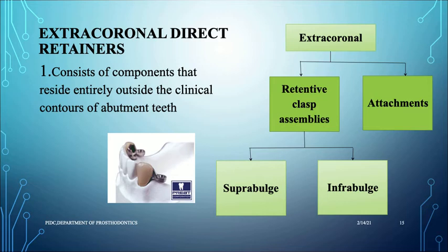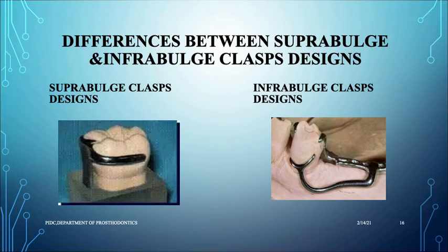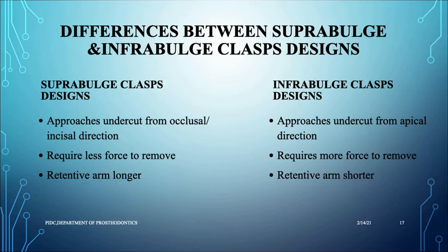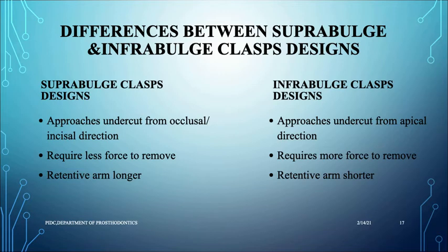For extracoronal retainers we will learn about supra bulge and infra bulge clasps. A supra bulge clasp approaches from the occlusal or incisal direction and engages the undercut from above; it requires less force to remove and is more retentive. An infra bulge clasp approaches from the apical or tissue direction; it requires more force to remove and is less retentive.